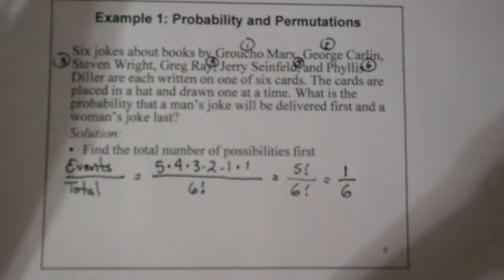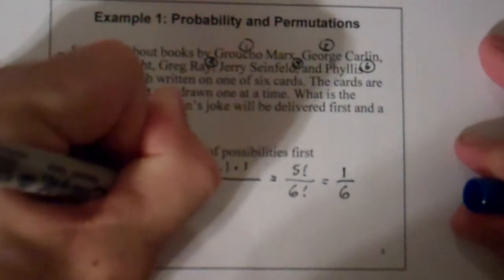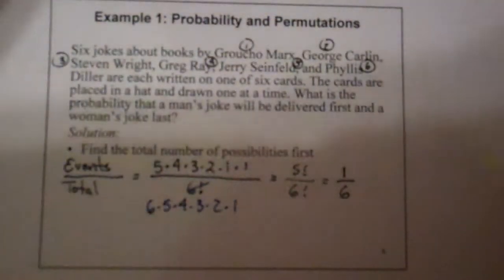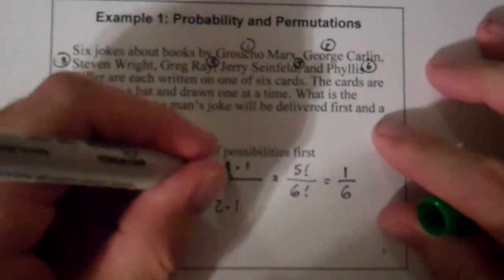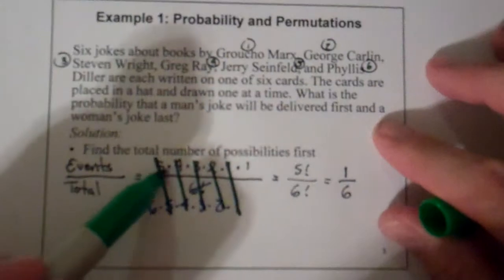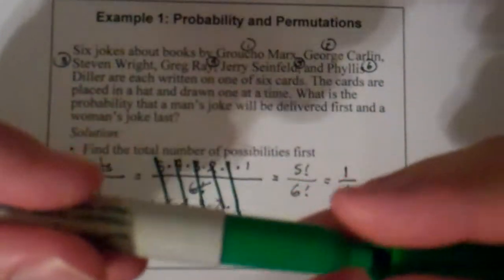And of course you can see that here, if I went ahead and took this six and expanded it out, six, five, four, three, two, one, we could see that the ones will reduce, the twos will reduce, the threes will reduce, the fours will reduce, the fives will reduce, and all I'm left with is one on the top and six on the bottom.